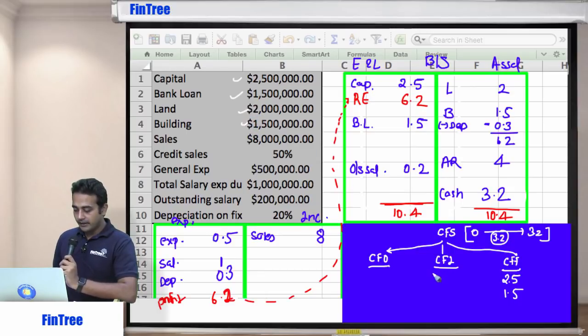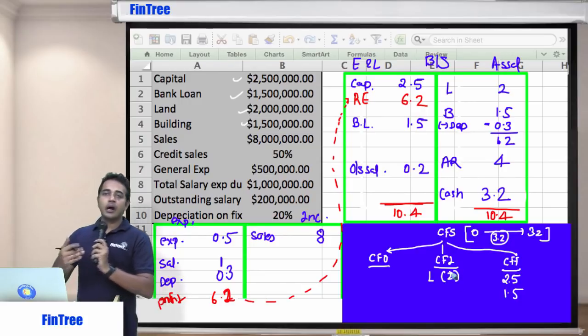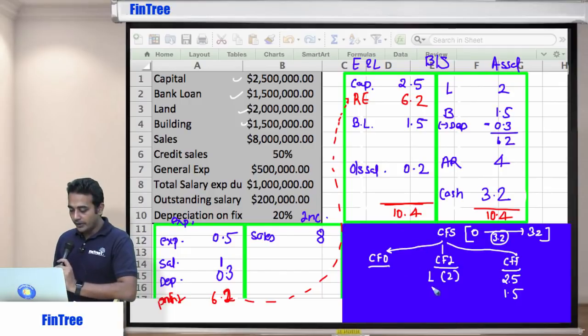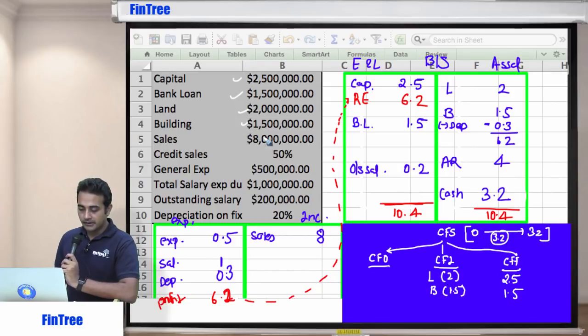Then buying land and building is? Investing activity. So this is going to be negative 2. Now it's a cash outflow. Money is going out. So negative number. Building is going to be negative 1.5. I'll give you time to write. Just observe. Sales 8. But did we receive the whole amount in cash? No. So we just received 4 in cash. So therefore, sales is going to be an inflow. But just 4, not 8. We are only concerned with cash.